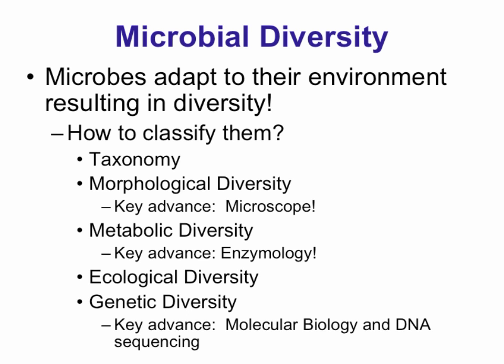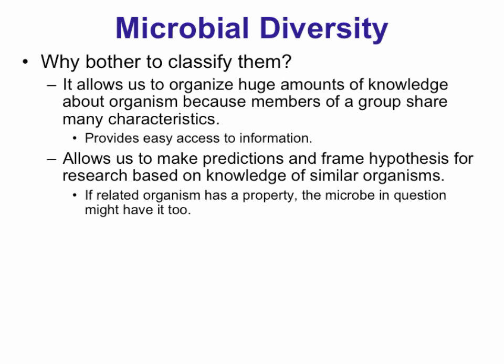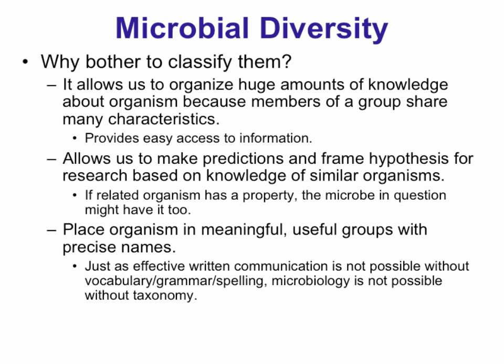Why do we classify them? Classification allows us to organize that vast knowledge of what they do into more compact groups, giving us easy access to information. If you find an organism similar to another, you can make predictions about its biology based on a closely related neighbor. For example, Salmonella and E. coli are very closely related, so predictions you can make on E. coli can apply to Salmonella and vice versa. Meaningful groups also facilitate communication with other scientists, doctors, and policymakers.